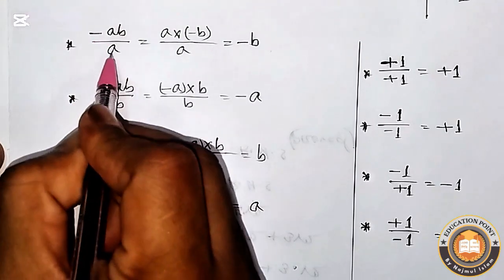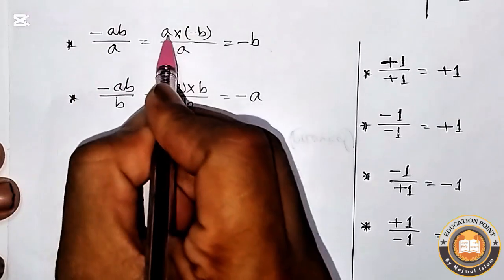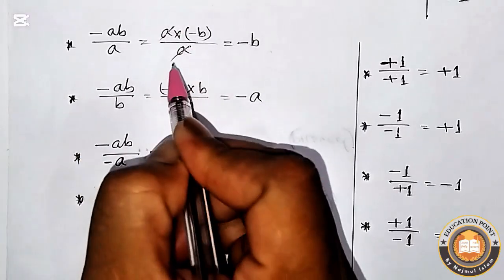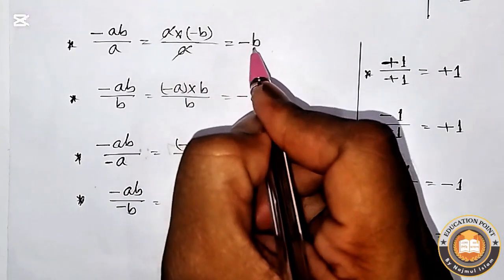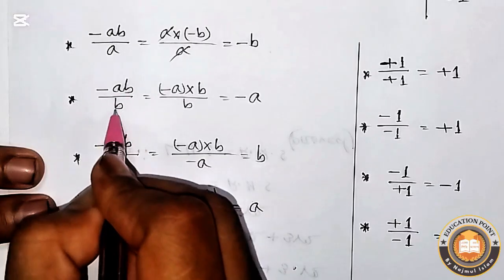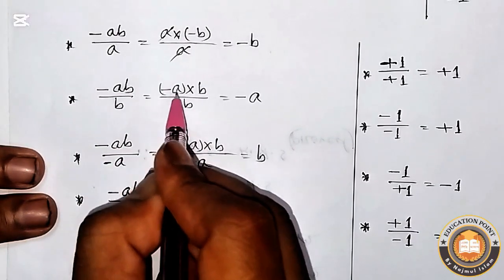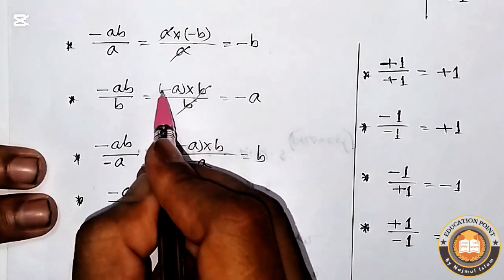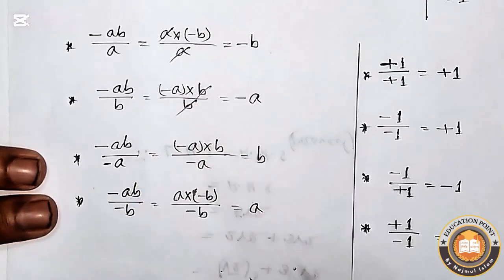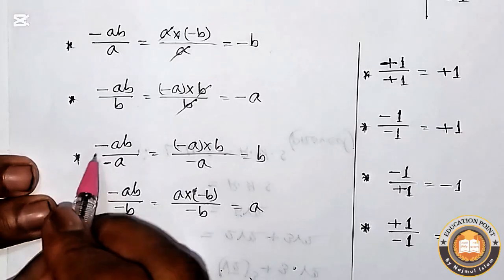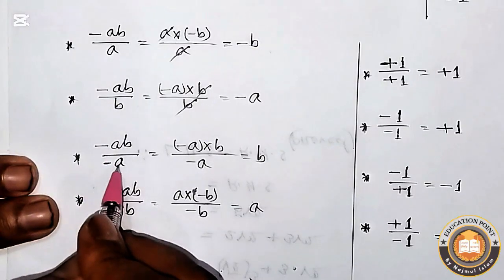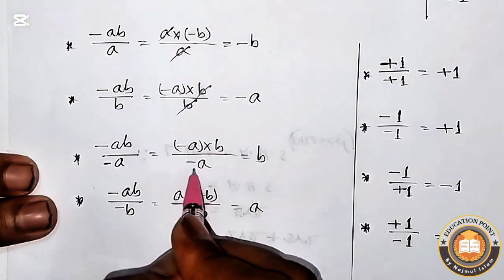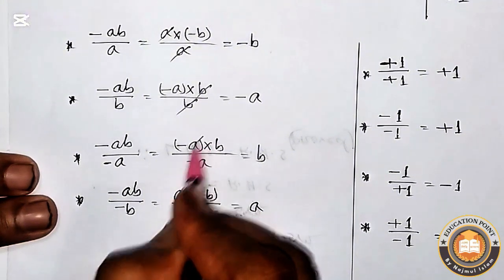Here, (-ab) divided by a means a × (-b); a and a cancel, so the answer is -b. Number two: (-ab) divided by b means (-a) × b; b and b cancel, so the answer is -a.